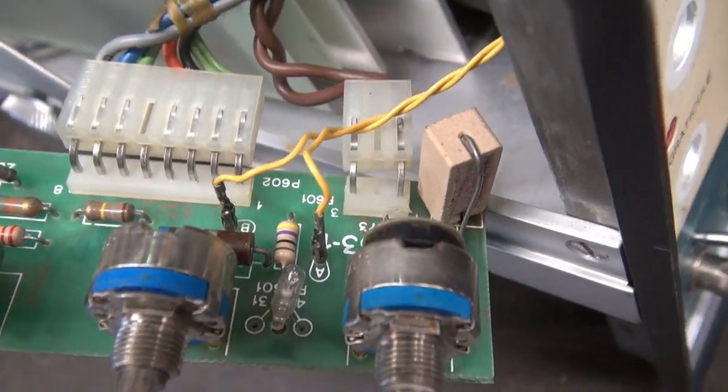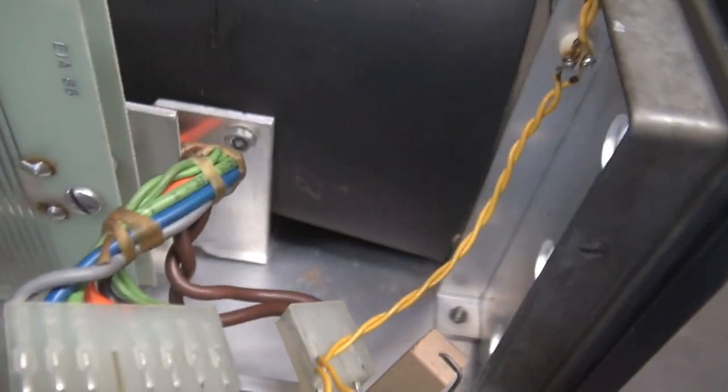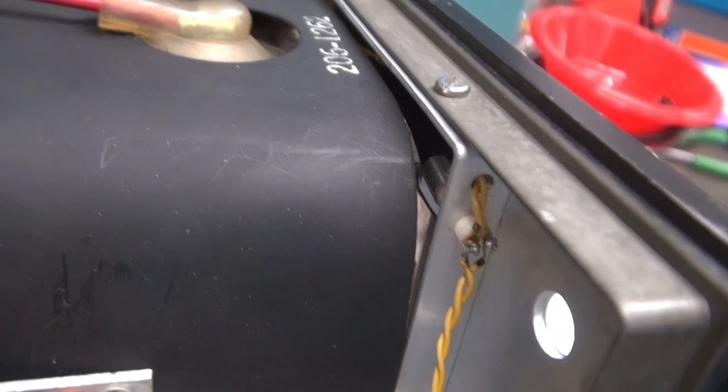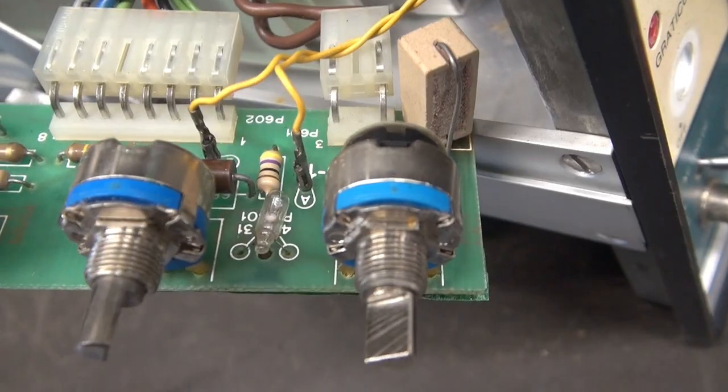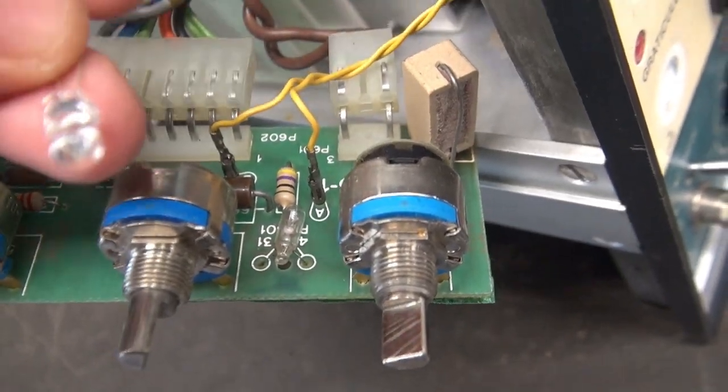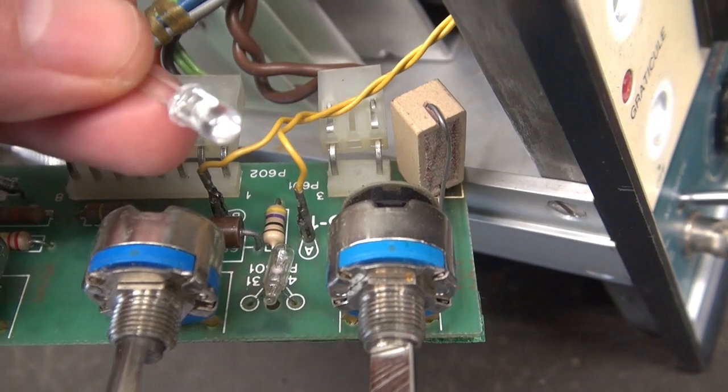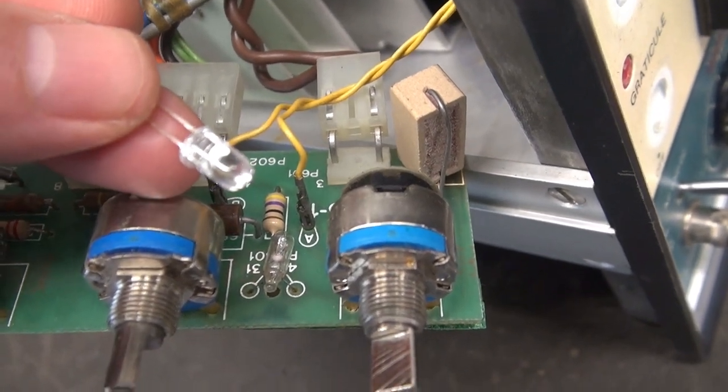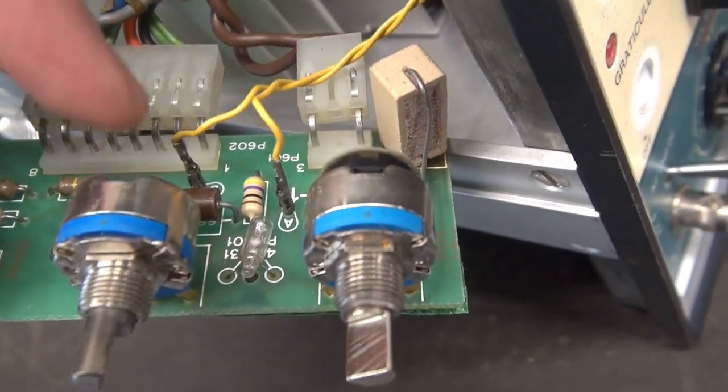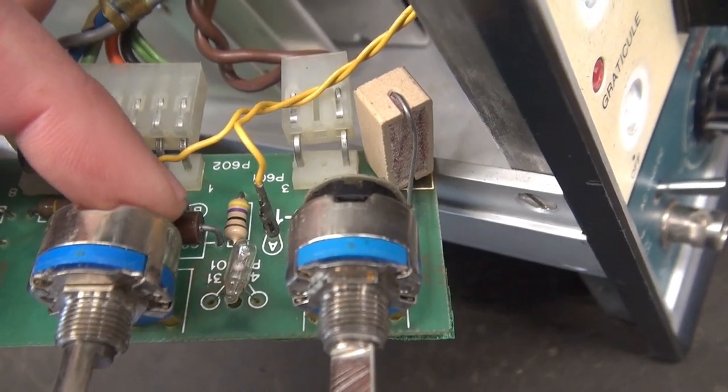Well, there it is—little incandescent bulb, 47 ohm resistor, and these two leads go to light the CRT graticule. To replace that little bulb, I'm going to put in a 5 millimeter high intensity red LED with a diode and change the current limiter resistor. That should work like a million bucks.